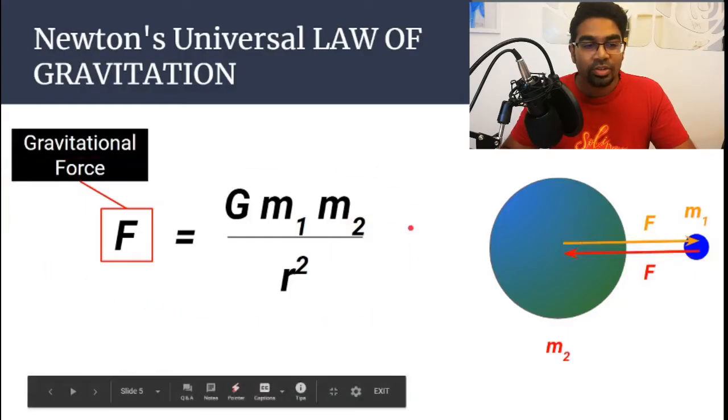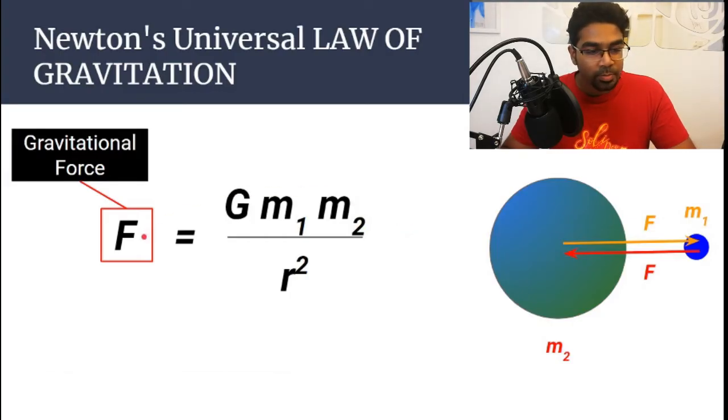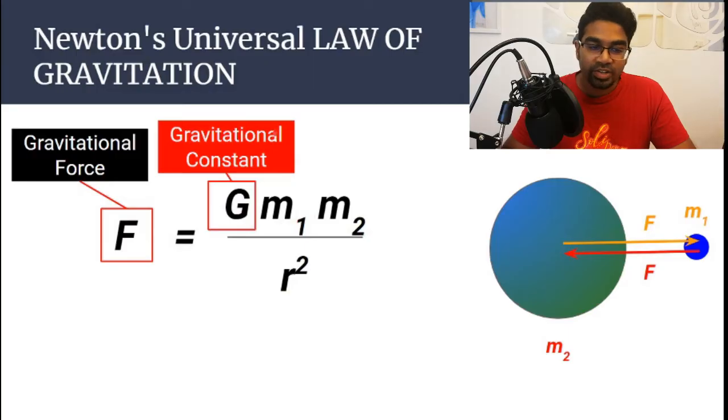This formula is an expression of Newton's universal law of gravitation. Let's look at it one by one. So F here represents the gravitational force. F equals G m₁ m₂ over r squared. What is the G? G is the gravitational constant. It is a fixed value. It does not change.